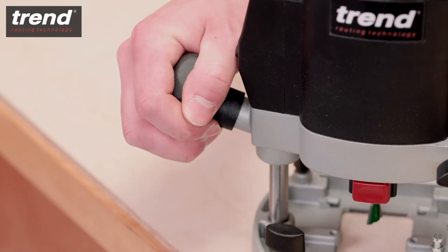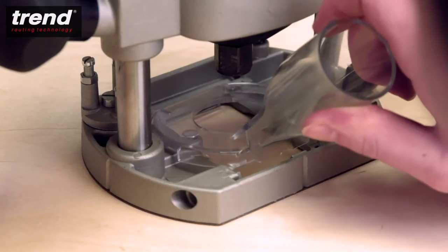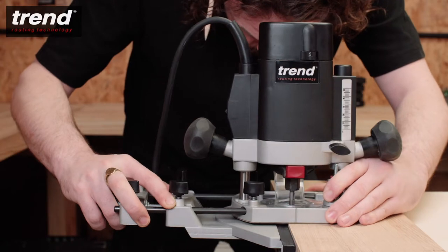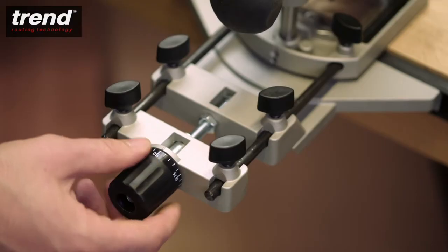Other key features are soft grip handles, a low profile dust spout and an adjustable twin rod side fence with micro adjustment.